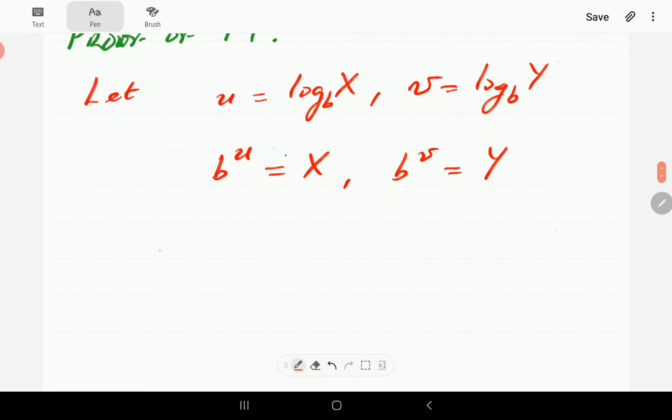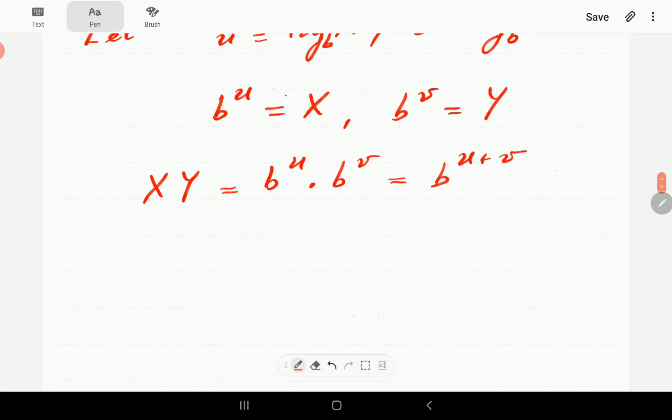Then from here, if we multiply x and y, then that's going to be b to the power of u times b to the power of v. But then in order for us to do this we add the indices, so that's b to the power u plus v.